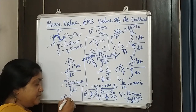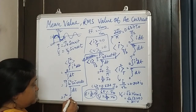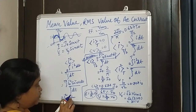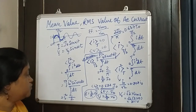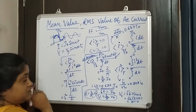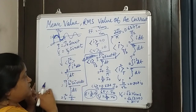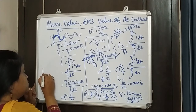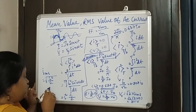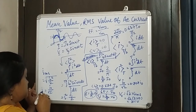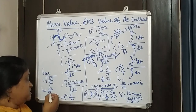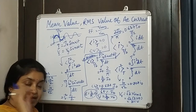This whole integration evaluates to I₀²/2. Now we take the square root of this mean of squares. So I_RMS = √(I₀²/2), which gives us I₀/√2. This is the RMS value — the root mean square value — which is (1/√2) times the maximum value I₀.